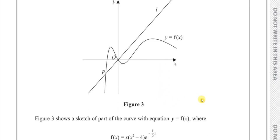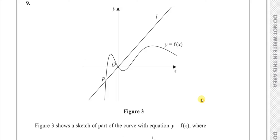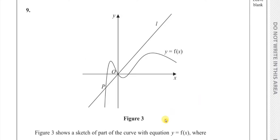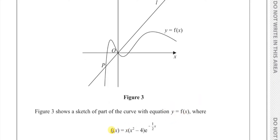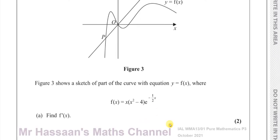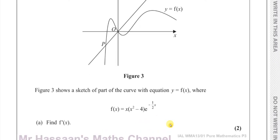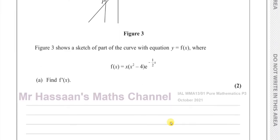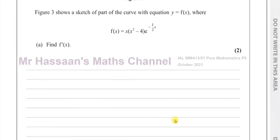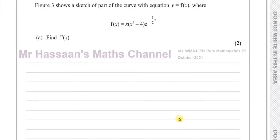Here we have a question about a curve which has equation y equals f of x, where f of x is x times (x squared minus 4) times e to the power of minus a half x. We are asked to find f'(x), which means find the derivative — differentiate f of x.